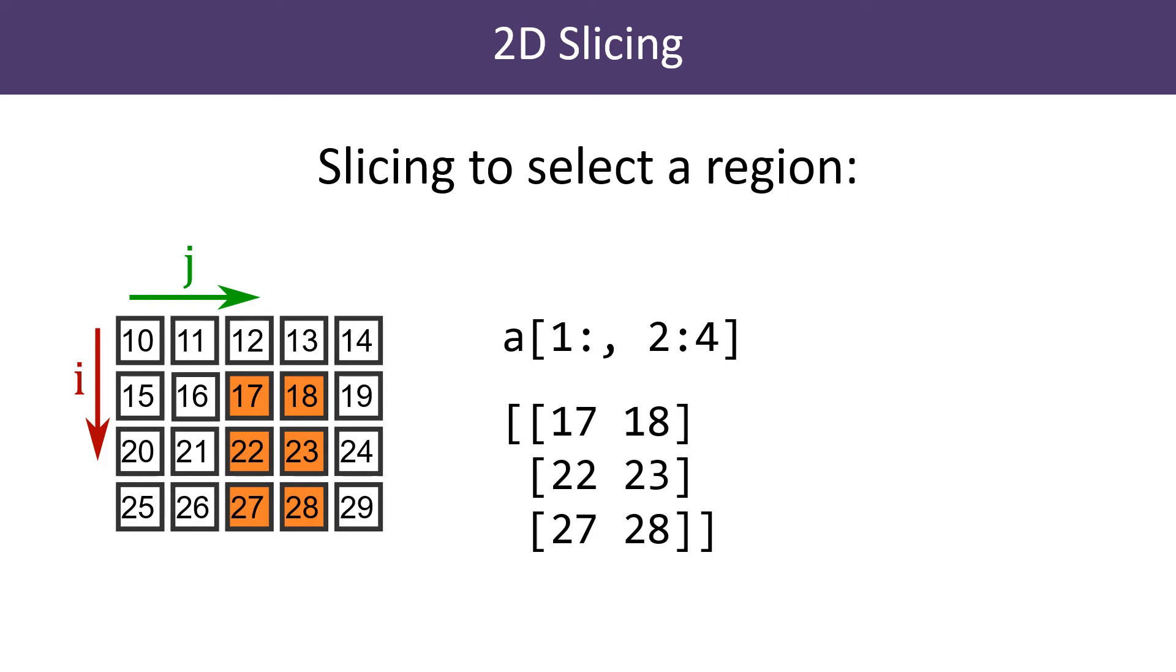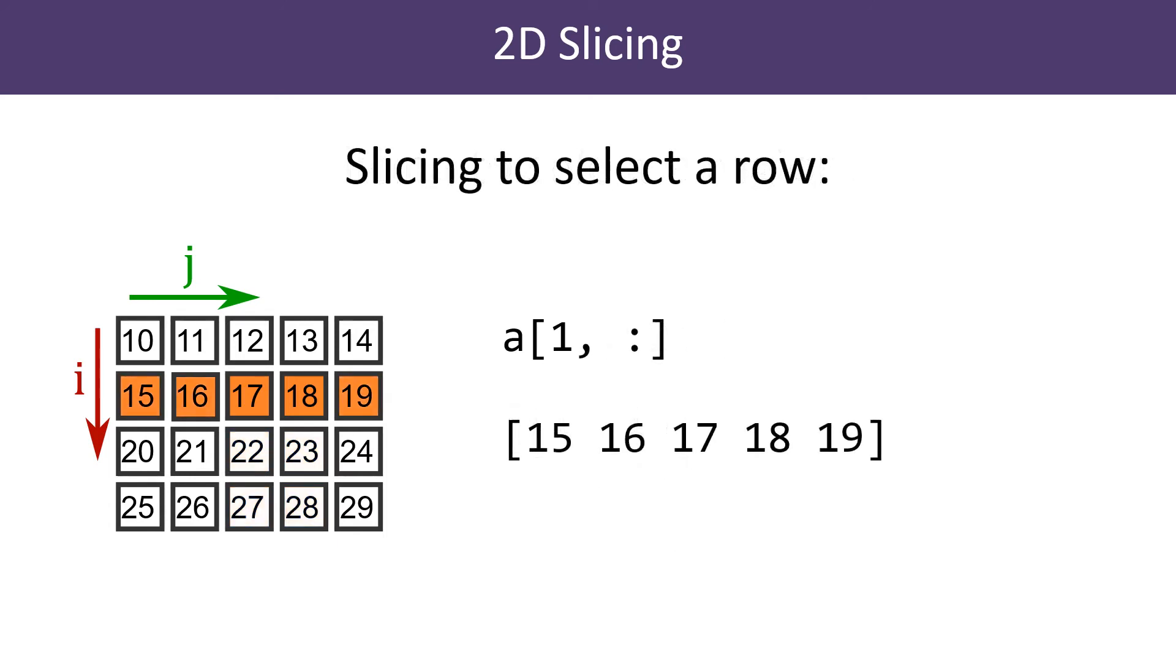We can select any rectangular subset of the array in this way. There is another possibility too. We can use an index for the row, but a slice for the column. In this example, we have selected row 1 and used a slice that includes every column.